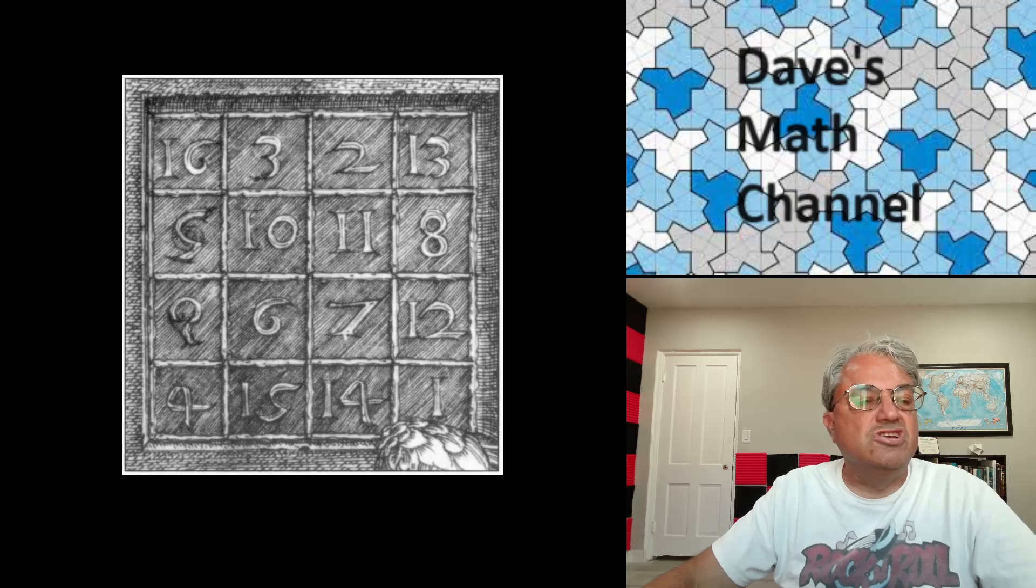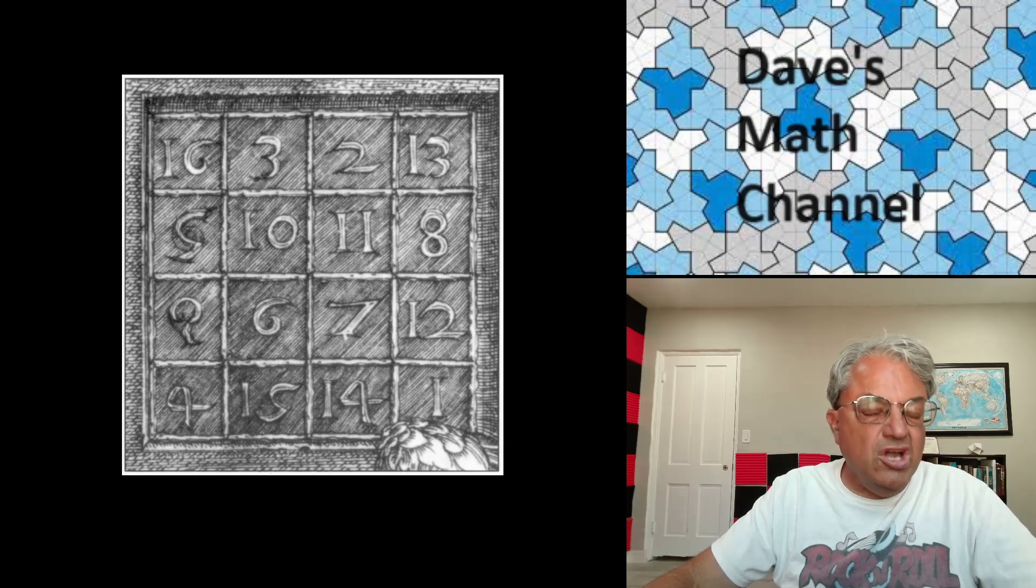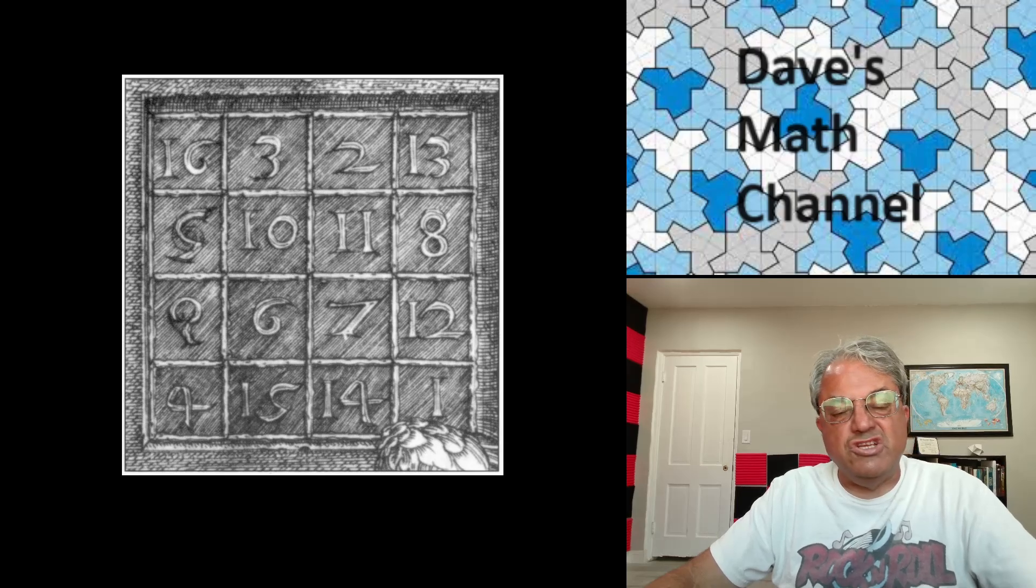So this is just a detail from the Melancholia 1. And it is his magic square. And it is an order 4 magic square. The magic constant for normal order 4 magic squares is 34. And you can check for yourself that every row, every column, and both of the long diagonals sum to 34. So that makes it a magic square.